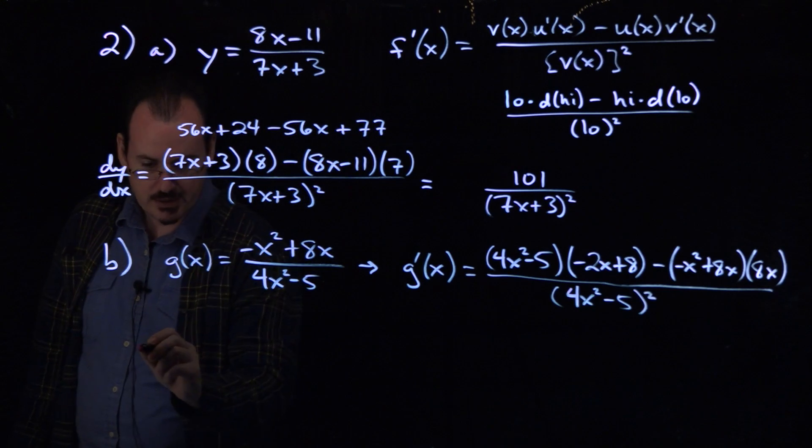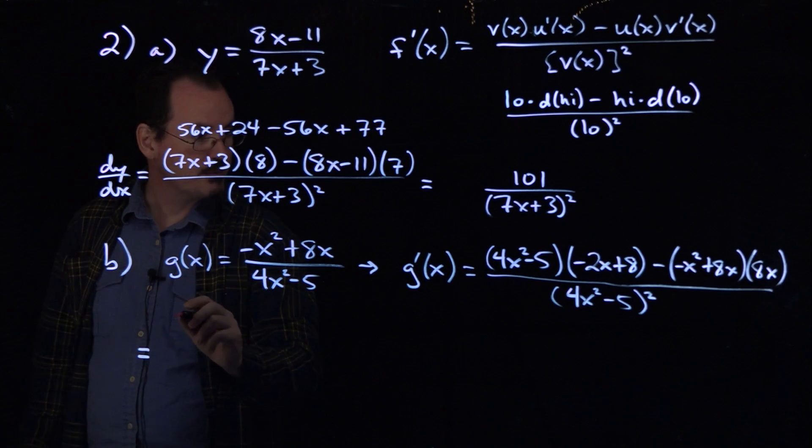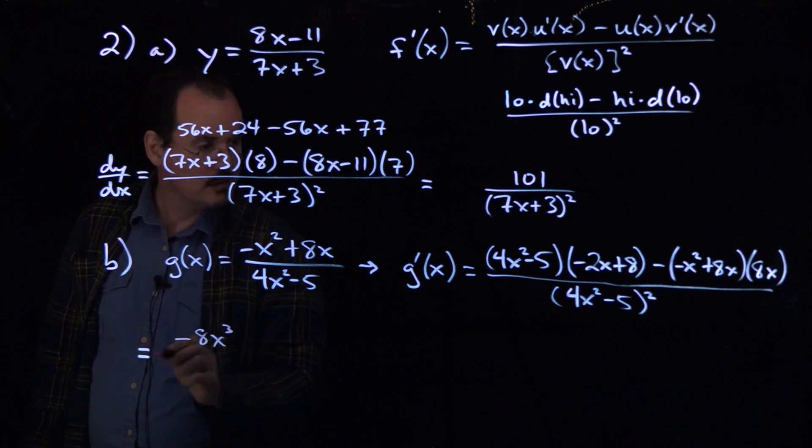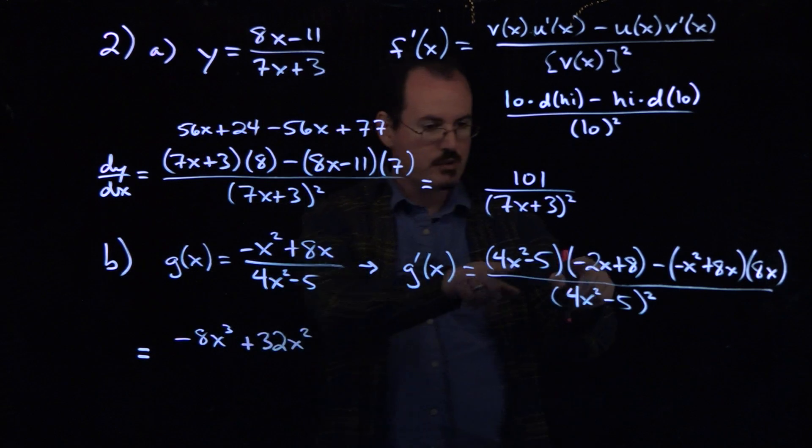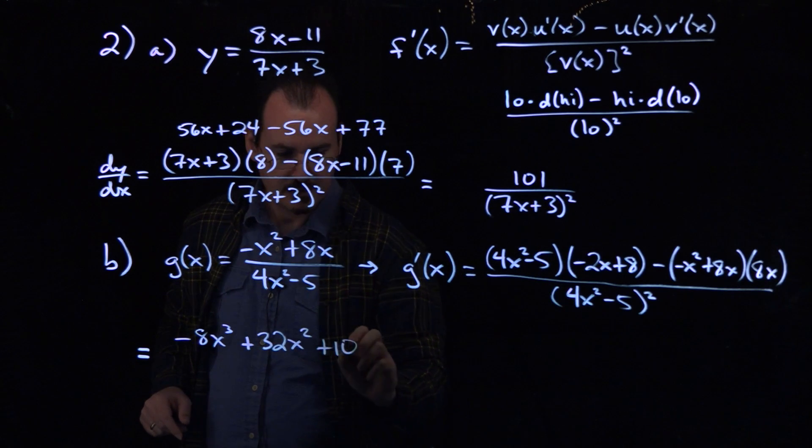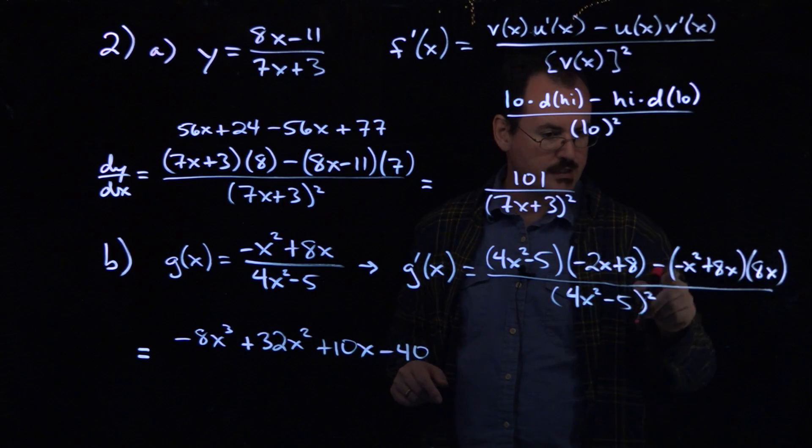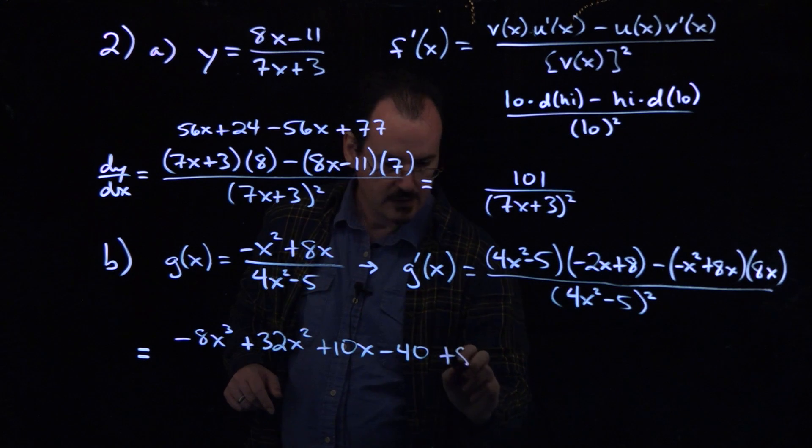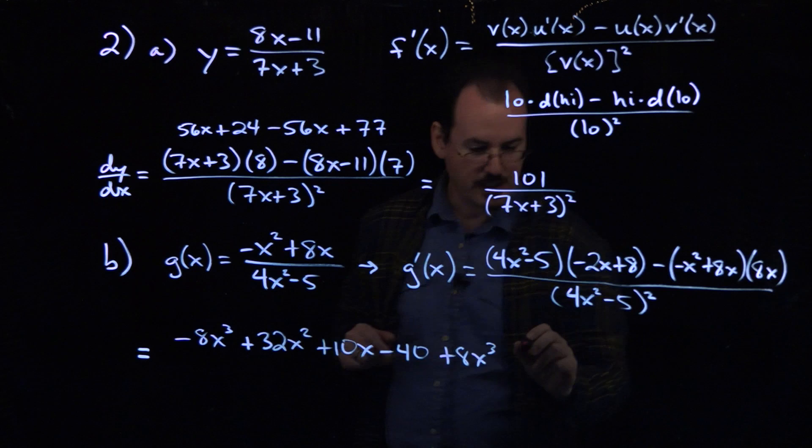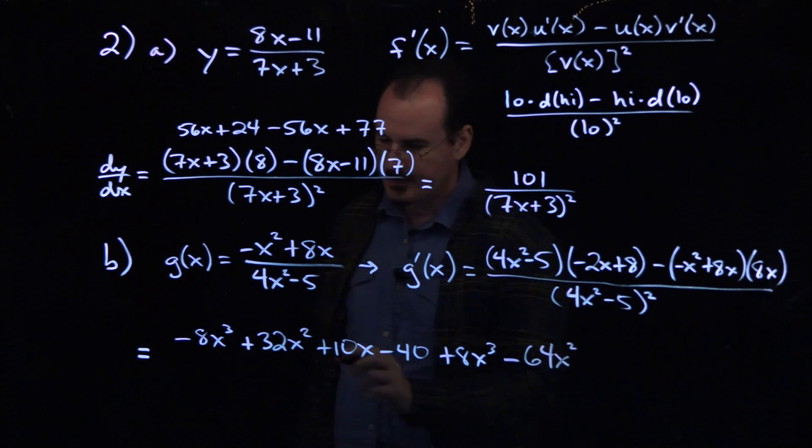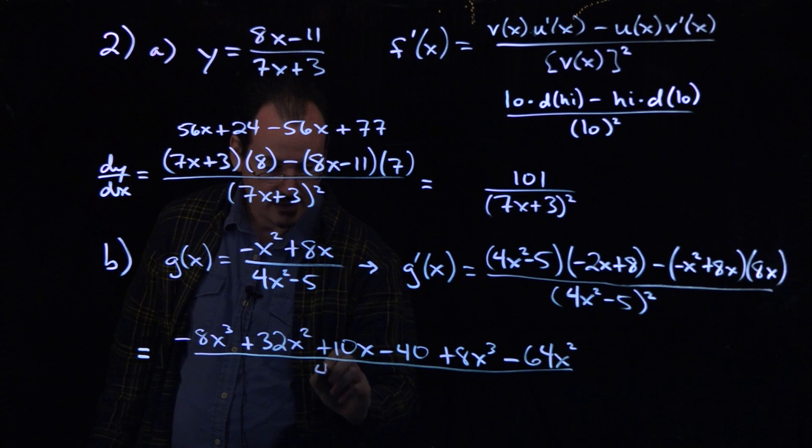So let's go ahead and simplify this one. If we multiply out that top term there, we're going to have to foil that out. So we'll get negative 8x to the third. The outer one's going to give us plus 32x squared. The inner one will give us plus 10x. And then the last one will give us minus 40. And then for here, we just distribute the 8x and the minus as well, so we're going to get plus 8x to the third. And then to the second one, I'll get plus 64x squared, but that minus makes it minus, so minus 64x squared. And all this, of course, still divided by 4x squared minus 5 squared.